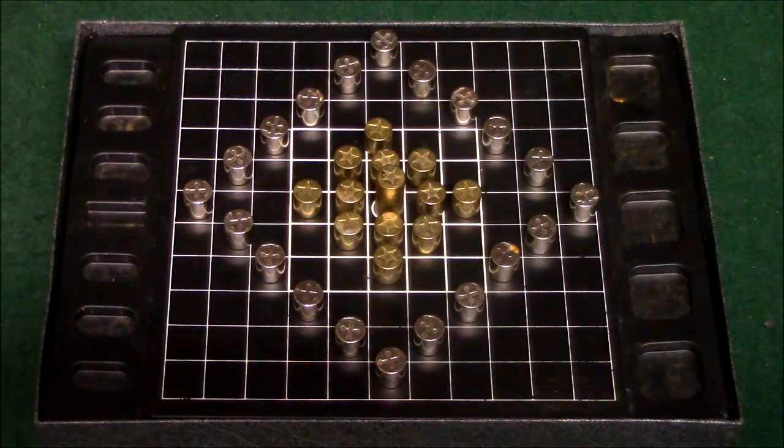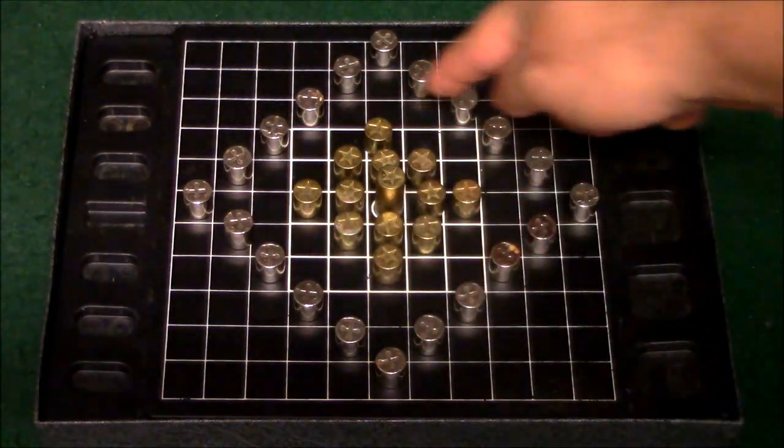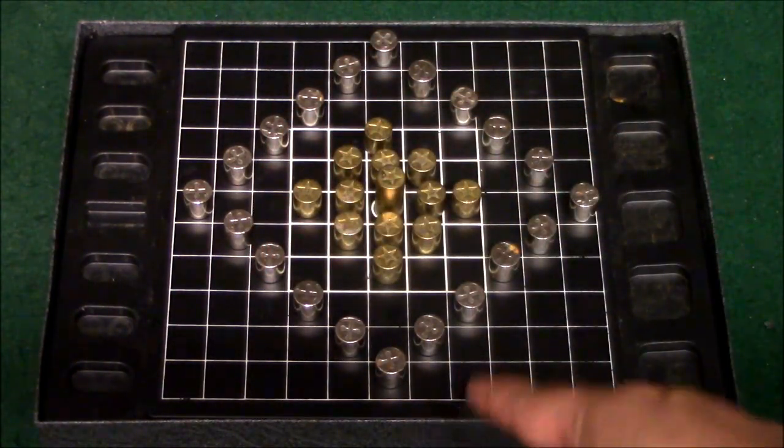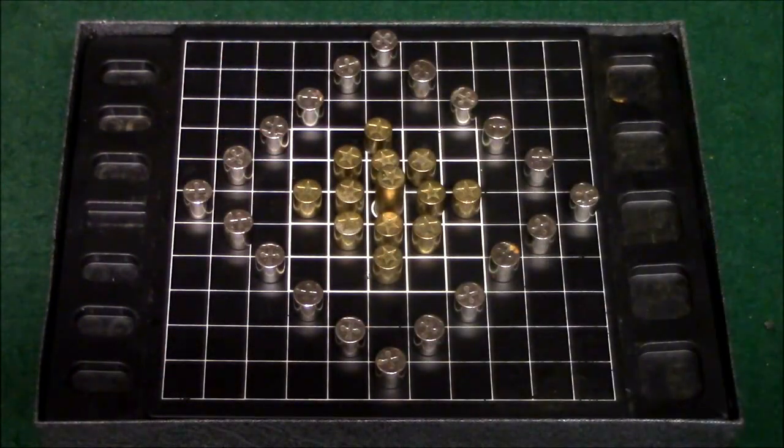Whoever is going to play the gold team is going to be setting up their pieces within this quadrant right here that's bolted out. Anybody who is on the silver team is going to be setting up their pieces outside of this quadrant so they're going to be out in this outer area over here.